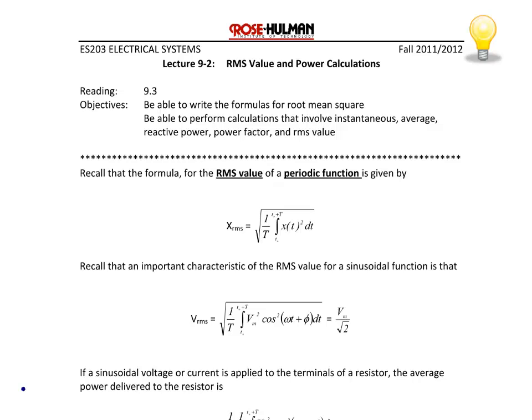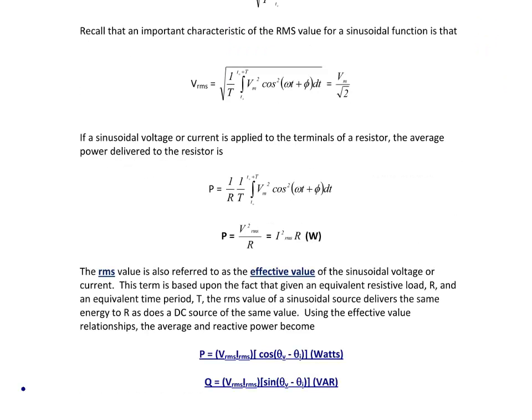Now let's look at why the RMS value is important to complex power. If a sinusoidal voltage or current is applied to the terminals of a resistor, the average power delivered to the resistor is given by the formula P equals 1 over R times 1 over T, the integral from t0 to t0 plus T, v_m squared cosine squared (ωt + φ) dt. That part in the integral multiplied by 1 over the period is the same as the RMS value: v_RMS squared over R, or that can also be written as I_RMS squared times R.